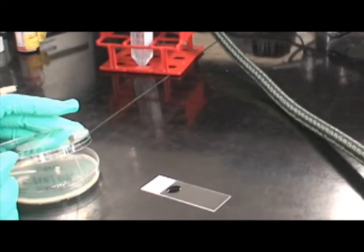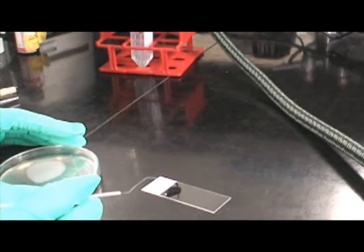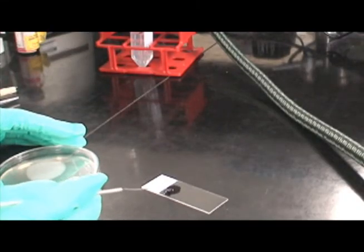With a sterile wire inoculating loop, transfer a small amount of bacteria to the microscope slide and mix with the drop of nigrosine.